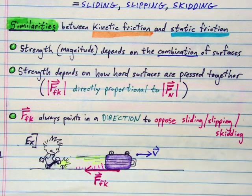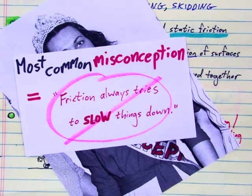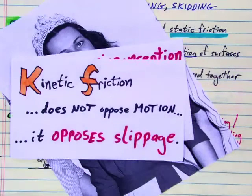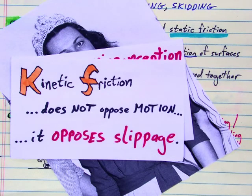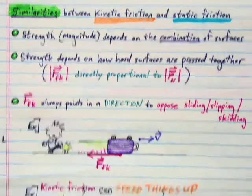But that brings me back to the most common misconception about friction: that it always slows things down. Not the case. Kinetic friction does not oppose motion, it opposes slippage. So here let's look at an example of how kinetic friction can actually speed something up.